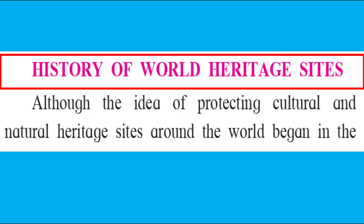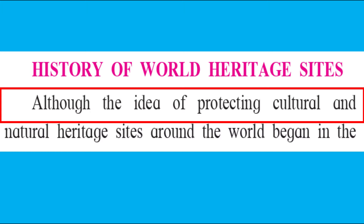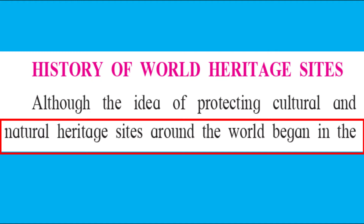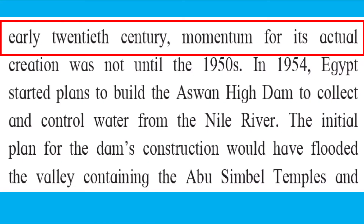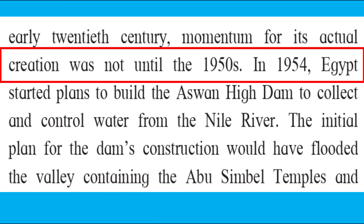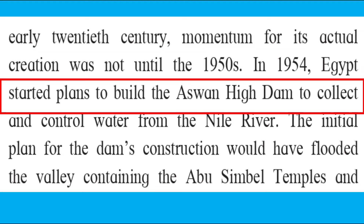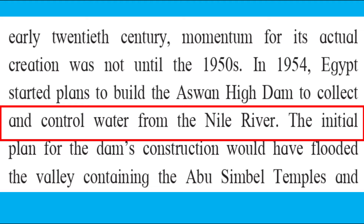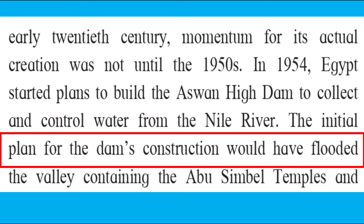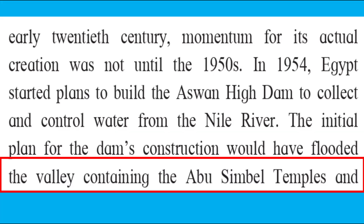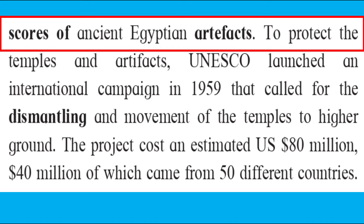History of World Heritage Sites. Although the idea of protecting cultural and natural heritage sites around the world began in the early 20th century, momentum for its actual creation was not until the 1950s. In 1954, Egypt started plans to build the Aswan High Dam to collect and control water from the Nile River. The initial plan for the dam's construction would have flooded the valley containing the Abu Simbel temples and scores of ancient Egyptian artifacts.